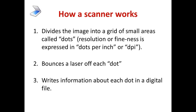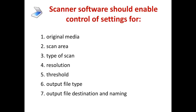How does the scanner work? A scanner divides an image into a grid of small areas, which it calls dots. The resolution or fineness of the scan is expressed in dots per inch, or dpi. The scanner bounces a laser beam off each dot, and it writes down information about each dot from the reflection it gets, written as a digital file. Scanner software varies according to the model of scanner you have. Probably the most common brand is HP — HP makes good scanners but terrible scanning software, so I stay away from HP. The software should enable you to control certain settings.